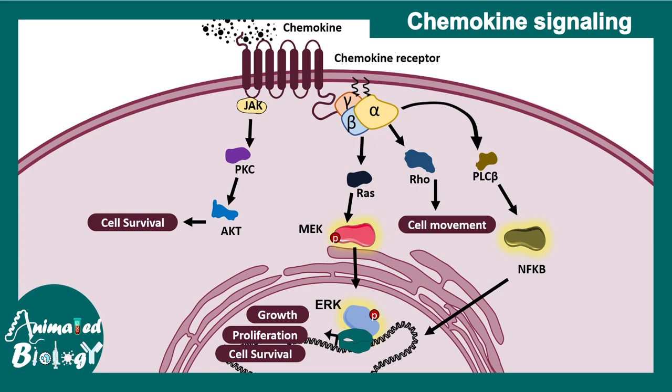Ultimately, a few things are happening due to chemokine signaling: cell movement, cell survival, and proliferation of these cells.